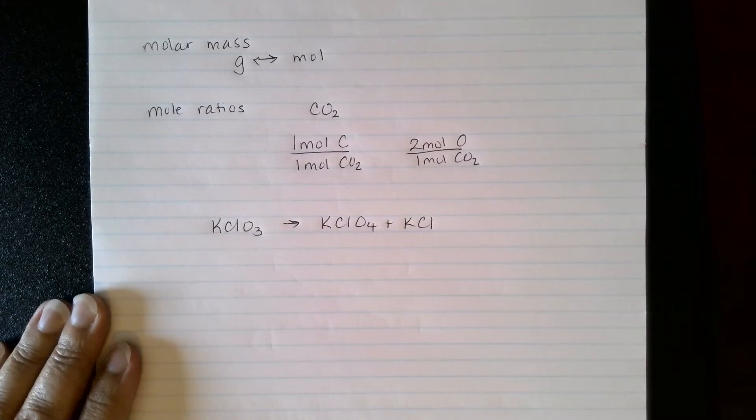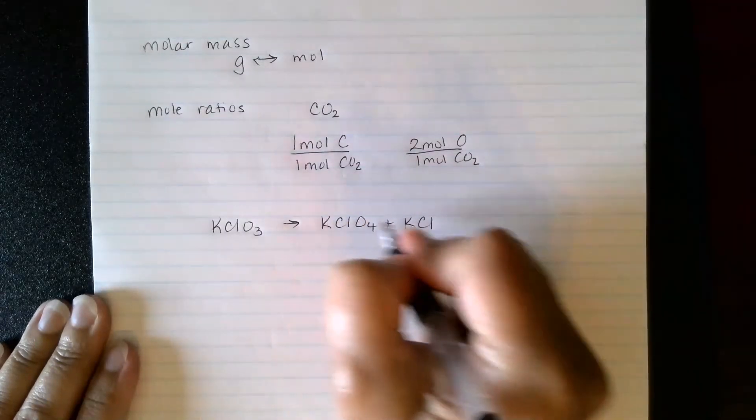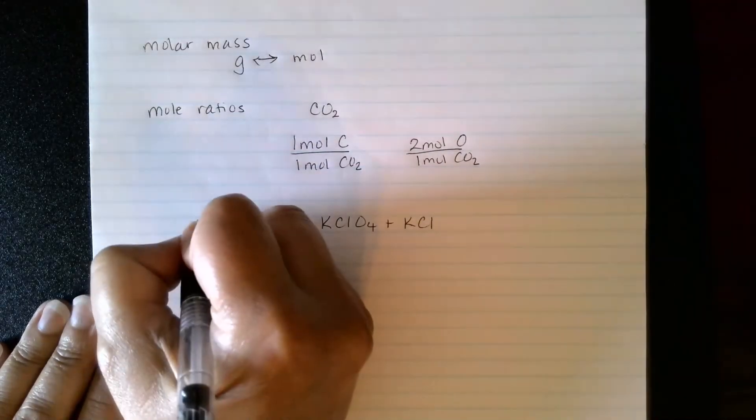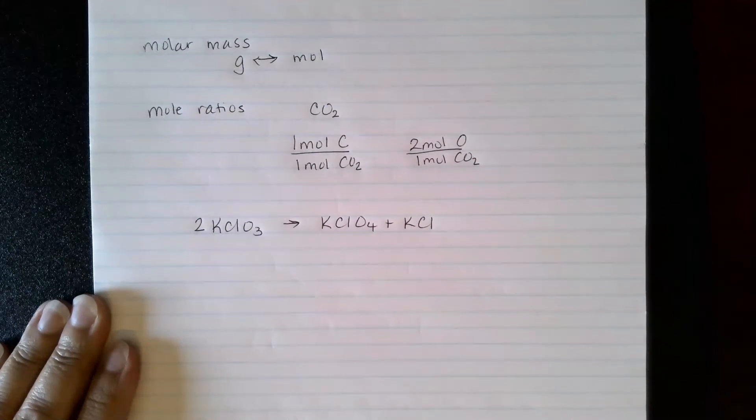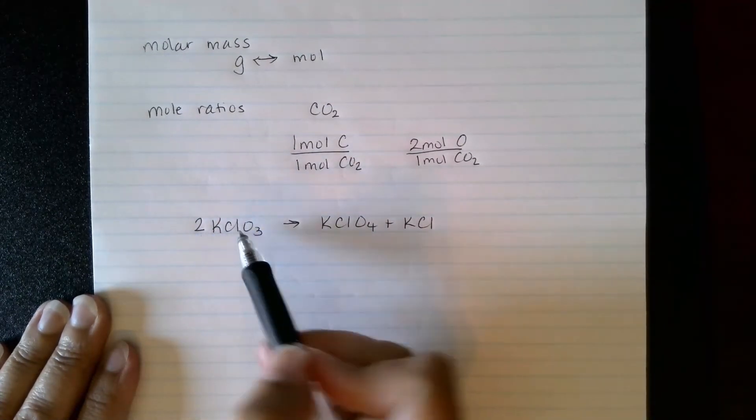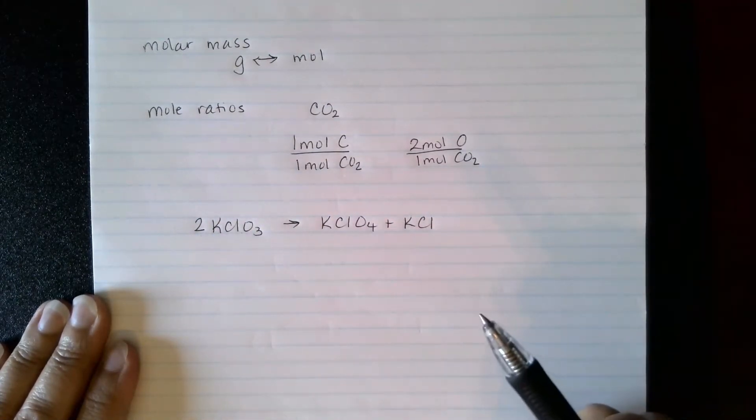So if we look at this, the first thing we'll notice is the reaction is not balanced. So I have one, two K's, two K's, so I'll use two K's. Then I have two Cl's, so one, two Cl's on the right side.